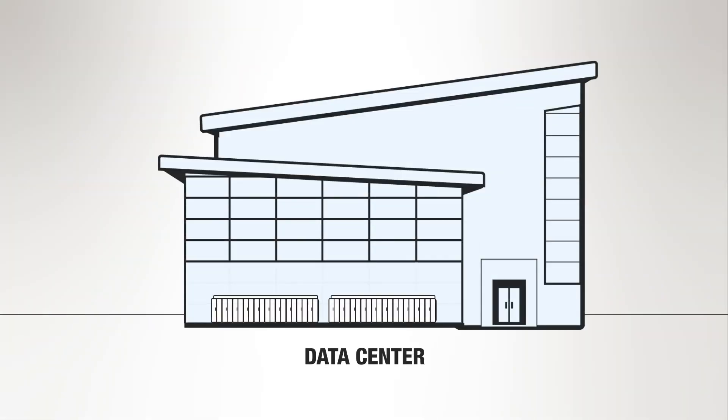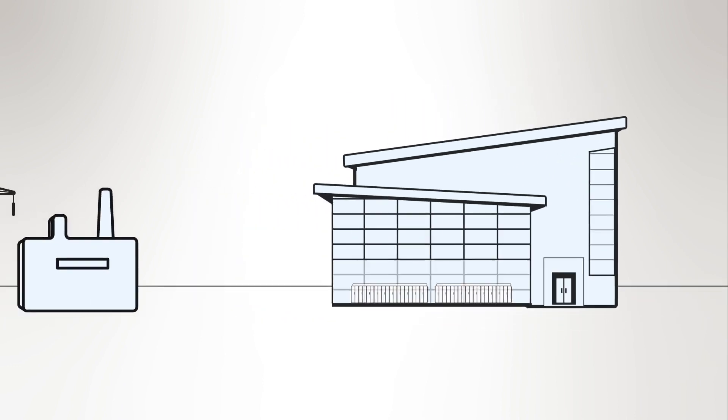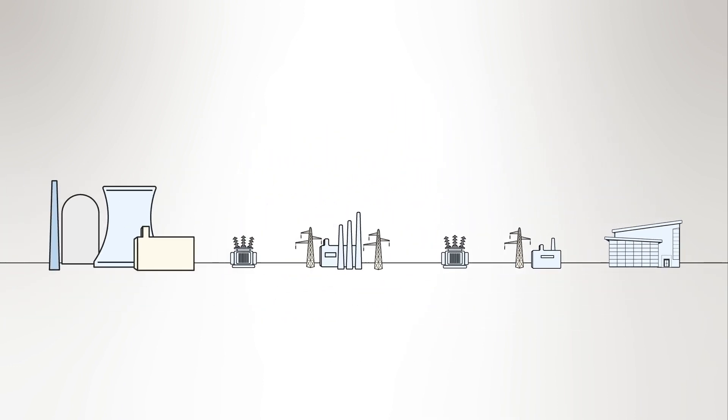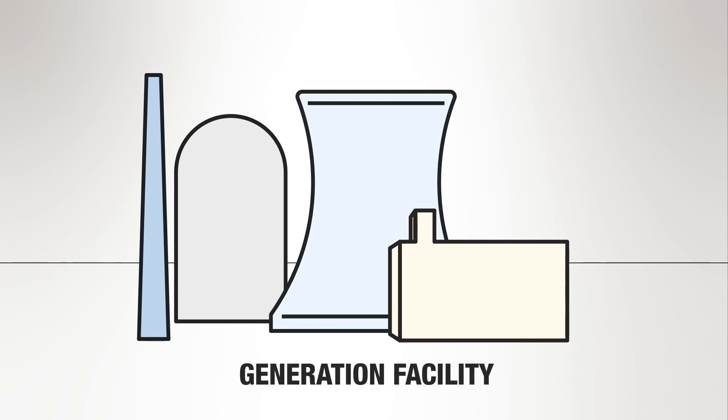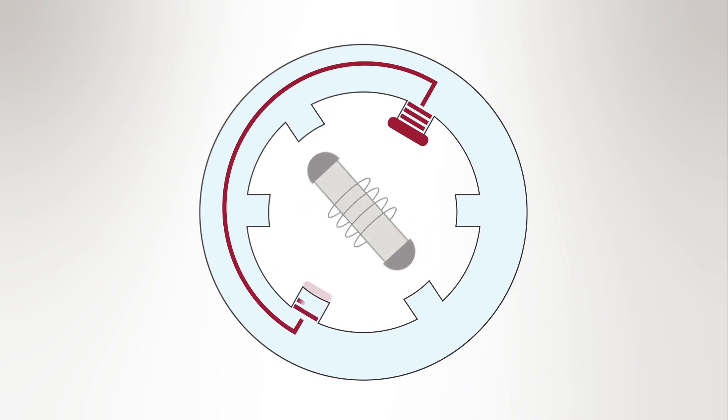To fully understand power in the data center, we need to start by looking at how power gets to the facility in the first place. The power grid begins at the generation facility, where power generators produce an alternating current with a spinning electromagnetic rotor.